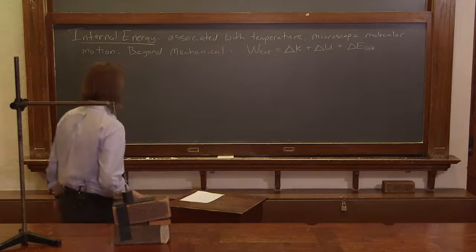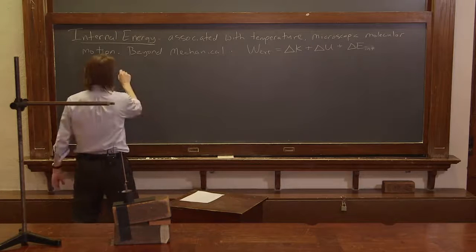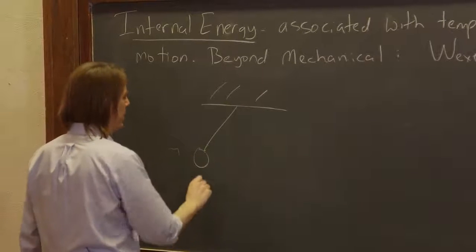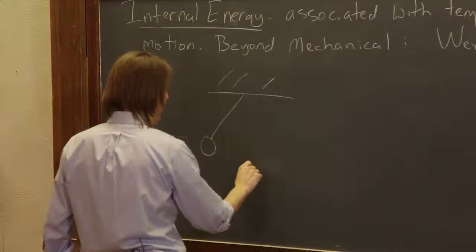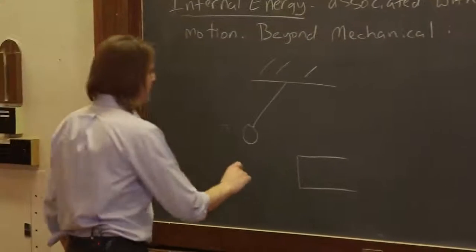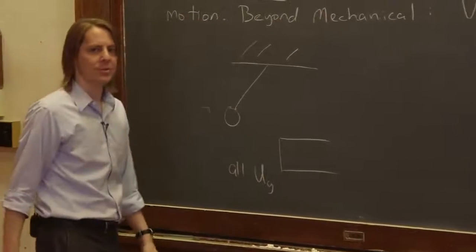Where'd the energy go? Well, let's draw this and see if we can figure out what happened. At the beginning, we just had pendulum way out here, and it was about to start coming down. And here we have the block. At this point, it's all potential, all gravitational potential energy.